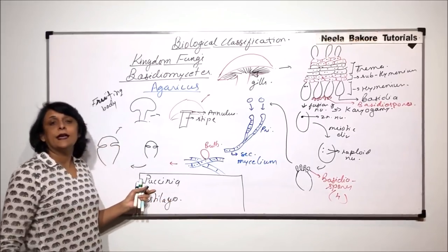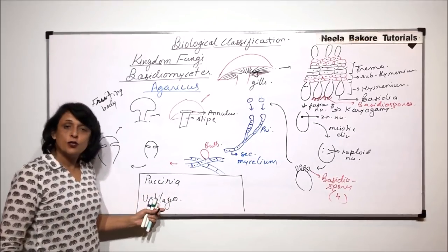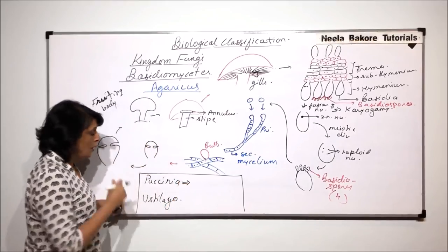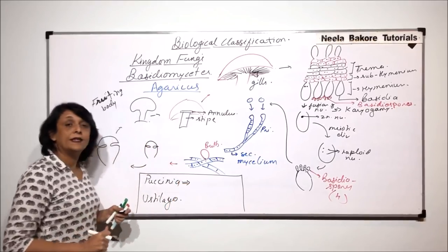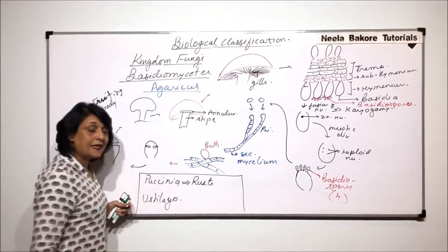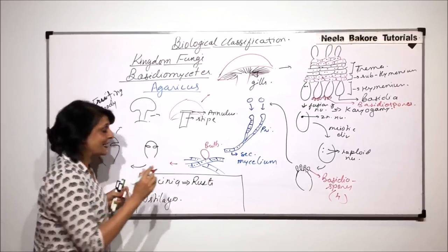Whenever we say there is a fungal infection, it could be Pucenia infection, it could be a Eustilago infection. Pucenia infection results into the diseases called rusts. And the reason is that the spores are rustic red.